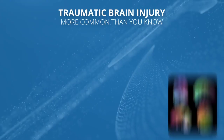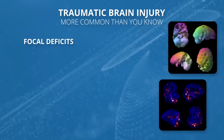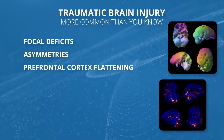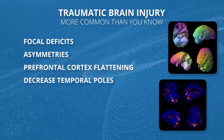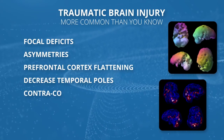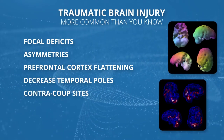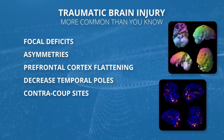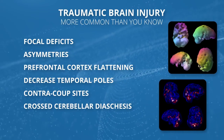Traumatic brain injury — as I talked about before — we actually see a number of different patterns. Sometimes we'll see a focal deficit, one side or the other; often we'll see asymmetries. We'll see the prefrontal cortex is flat, because it hits the front part of the skull over and over again. That's what we saw in our NFL players. We'll also see decreases in the temporal poles because they butt up against a sharp bony ridge, and contrecoup injuries — maybe damage in the front and on the opposite side in the back.